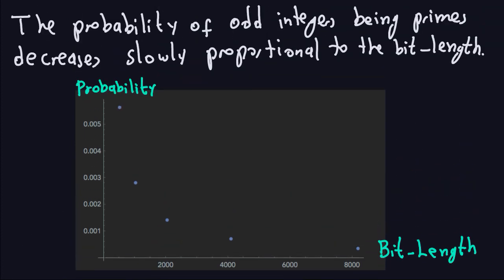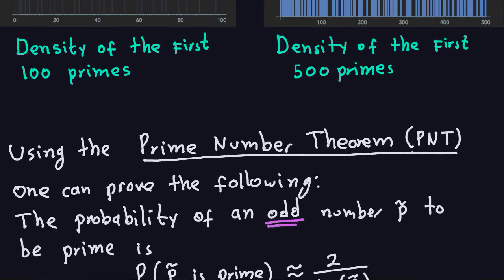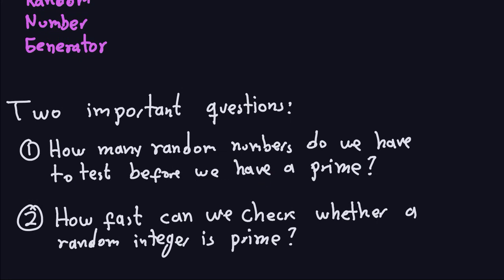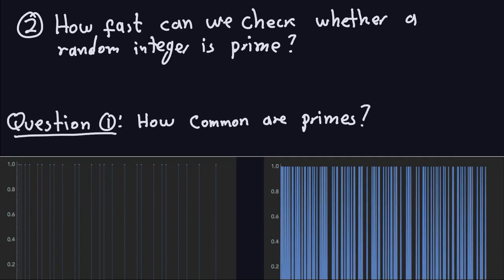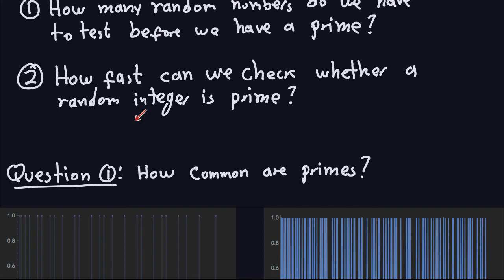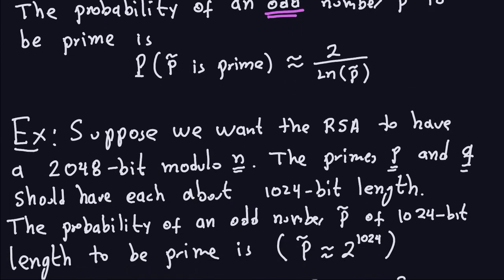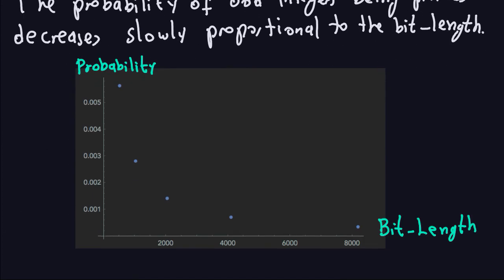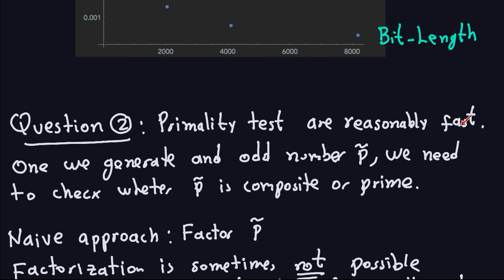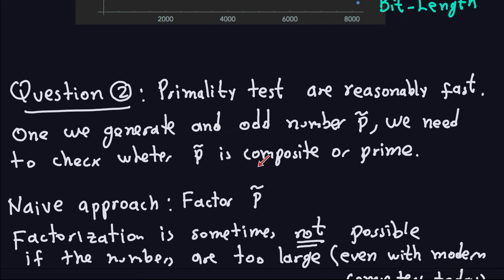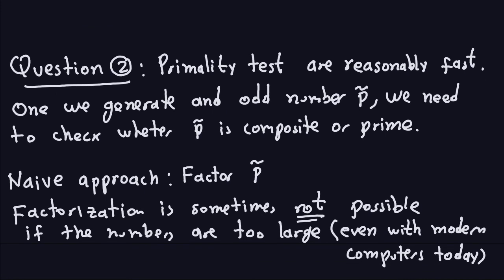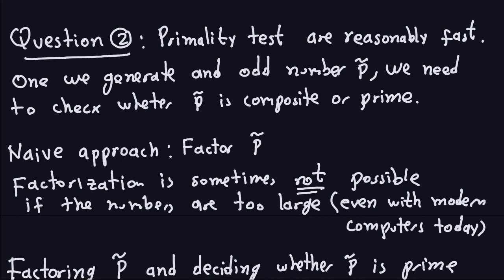Coming back to the first question — how many random numbers do we have to test before finding a prime? Not that many. And the second question: how fast can we check whether an integer is prime? The short answer is quite fast. Once you give me an odd number, it is quite fast to check whether that number is prime or not. Primality tests are reasonably fast, meaning in a short period of time we can check primality up to a certain certainty.